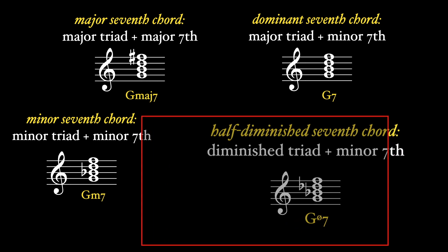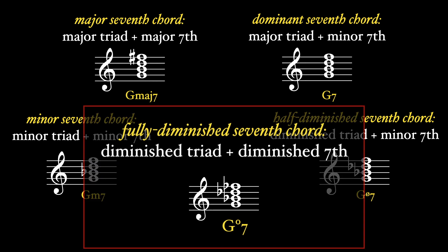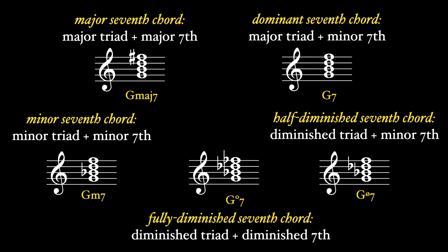Finally, a diminished triad plus a diminished seventh creates a diminished diminished seventh chord, otherwise known as a fully diminished seventh chord. Fully diminished seventh chords arise in a minor key when you stack thirds above the raised leading tone. The lead sheet notation for a fully diminished seventh chord involves the root, then the little circle, and then the seven. So these are the five main types of seventh chords.